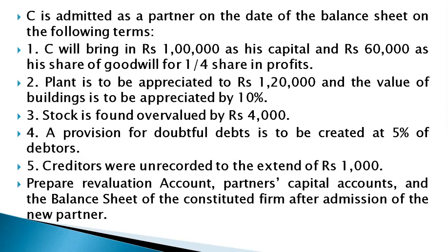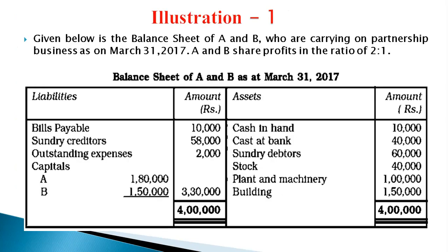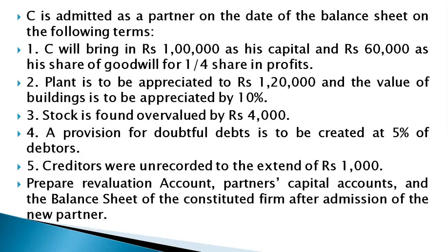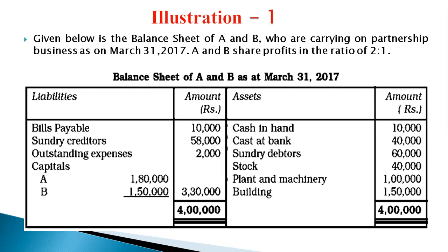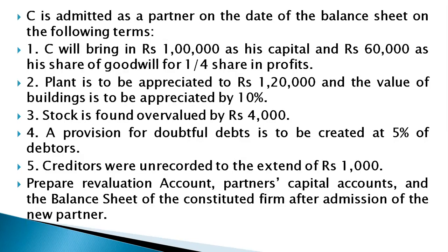Adjustment 5: A provision for doubtful debts is to be created at 5% of debtors. Debtors are 60,000, so 5% is 3,000. One effect: revaluation account debit side; second effect: minus 3,000 from debtors. Creditors were undervalued by 1,000 — so revaluation account debit side, and in the new balance sheet sundry creditors increase by 1,000, making new creditors 59,000.